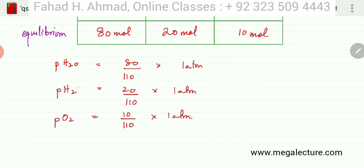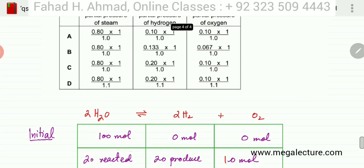So these are the three expressions, pH2 and PO2. pH2 had 20 moles out of the total mixture had 110 moles multiplied by 1 atmosphere. PO2 had 10 moles out of a total of 110 moles at equilibrium into 1 atmosphere pressure. So these are my partial pressures that I've calculated. I'm going to match them in the expression. So let's go back and look at the expression.